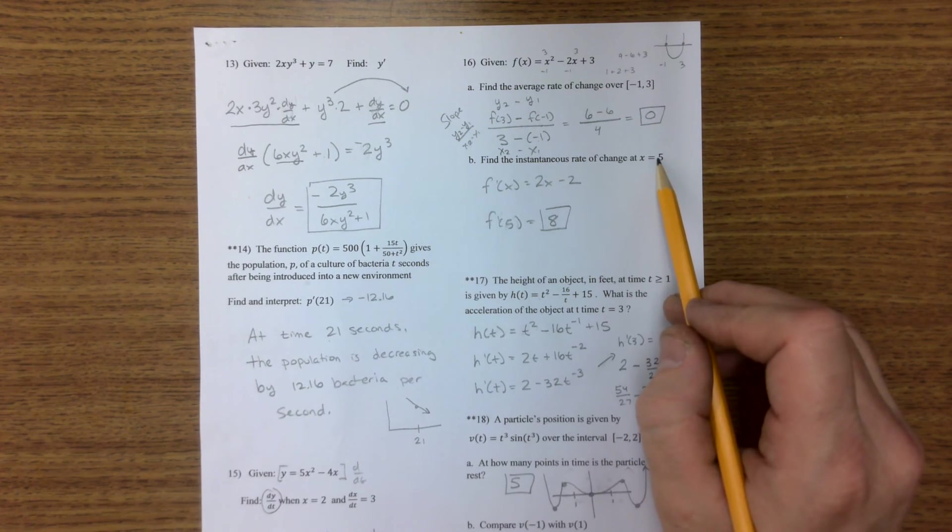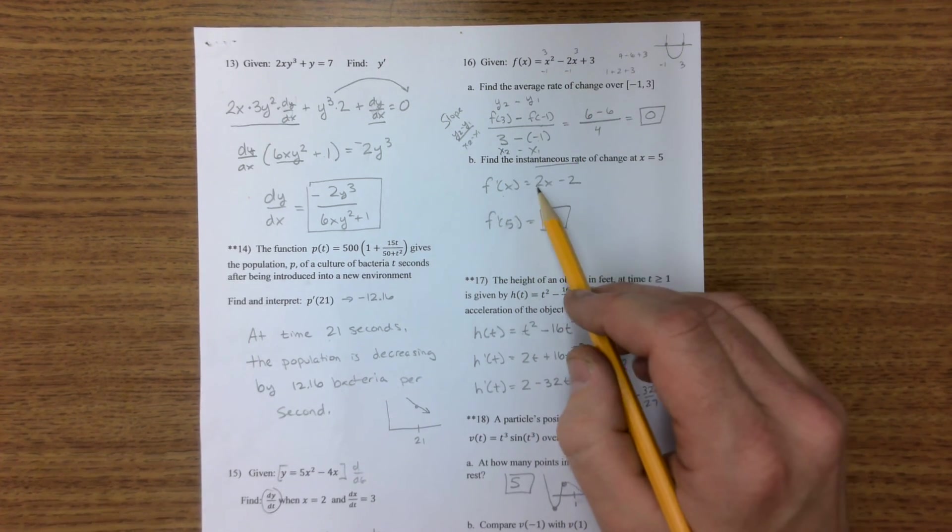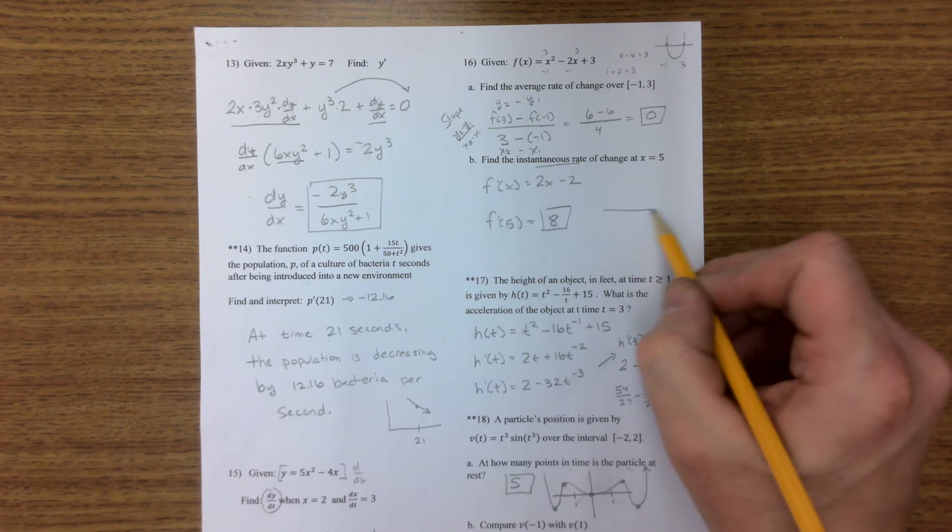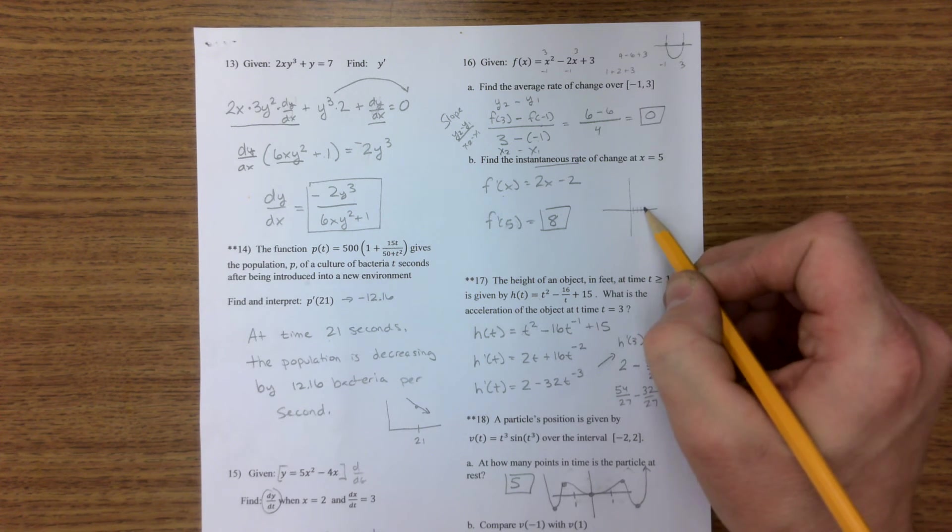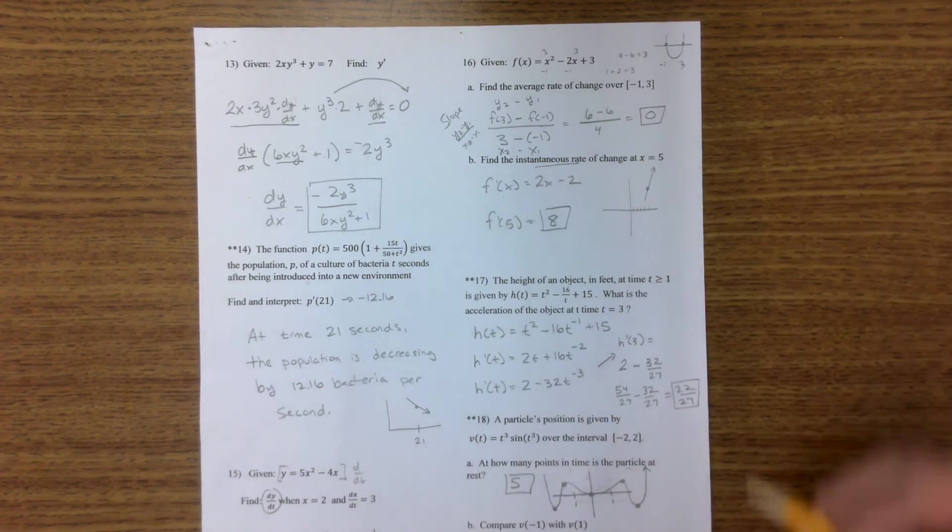But what is the instantaneous rate of change at 5? Well, for this, we need a derivative. And the derivative is 2x minus 2. Plug in 5 is 8. Well, what does that mean? That means on day 5, there's a point here, and the slope is up 8 over 1.